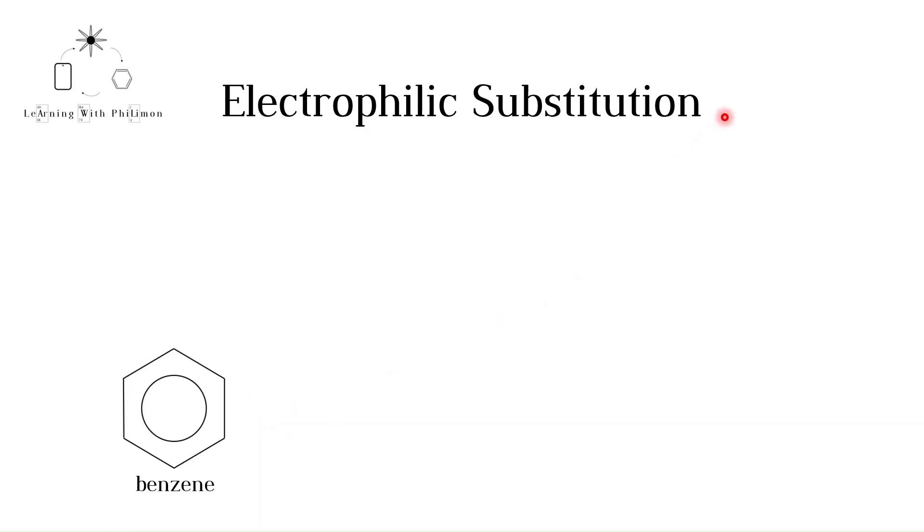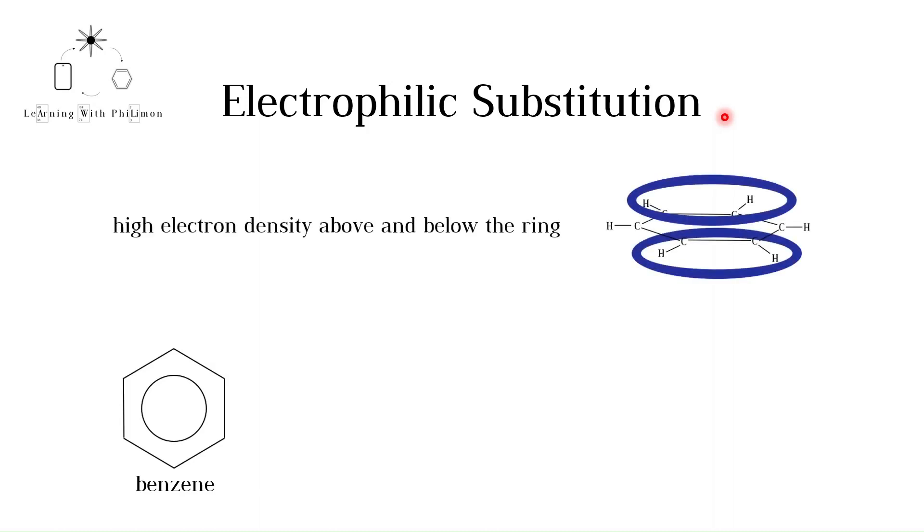In this video we will focus on the reaction of benzene with halogens. This reaction is also called halogenation. Remember that benzene contains 6 delocalized electrons in a molecular orbital above and below the ring, as seen in this diagram. This means that there is a high electron density in the ring. For more on the structure of benzene, please watch the previous video.